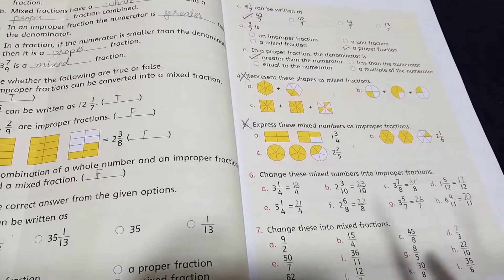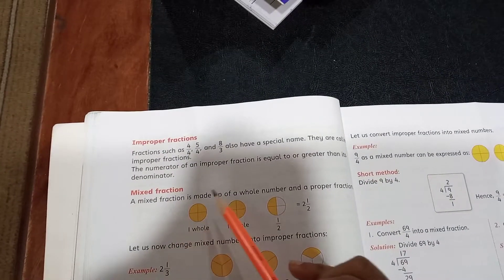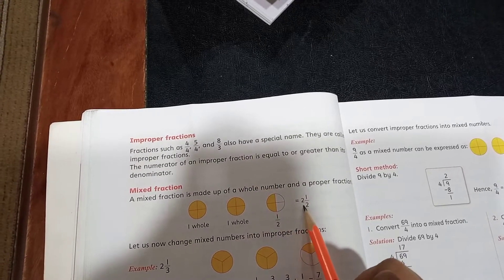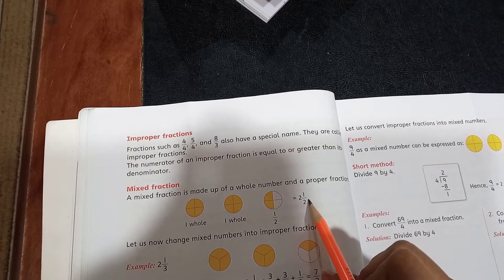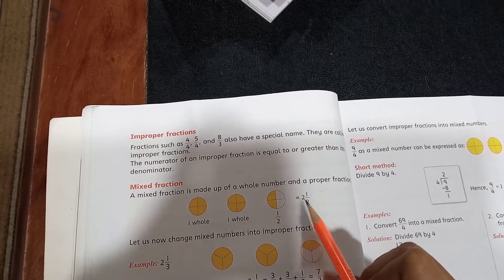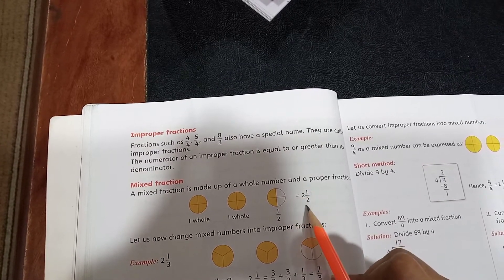I told you a mixed fraction is made up of a whole number like this 2, 2 is a whole number, and a proper fraction 1 by 2 is a proper fraction because its numerator is smaller than the denominator. So when whole number and proper fraction combine together, it makes a mixed fraction.